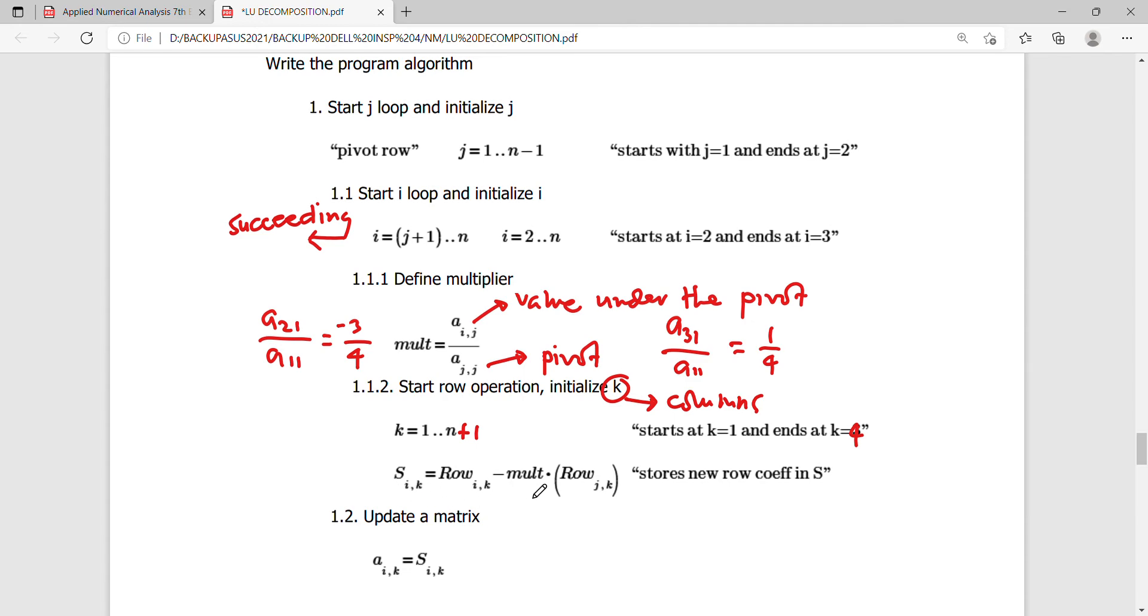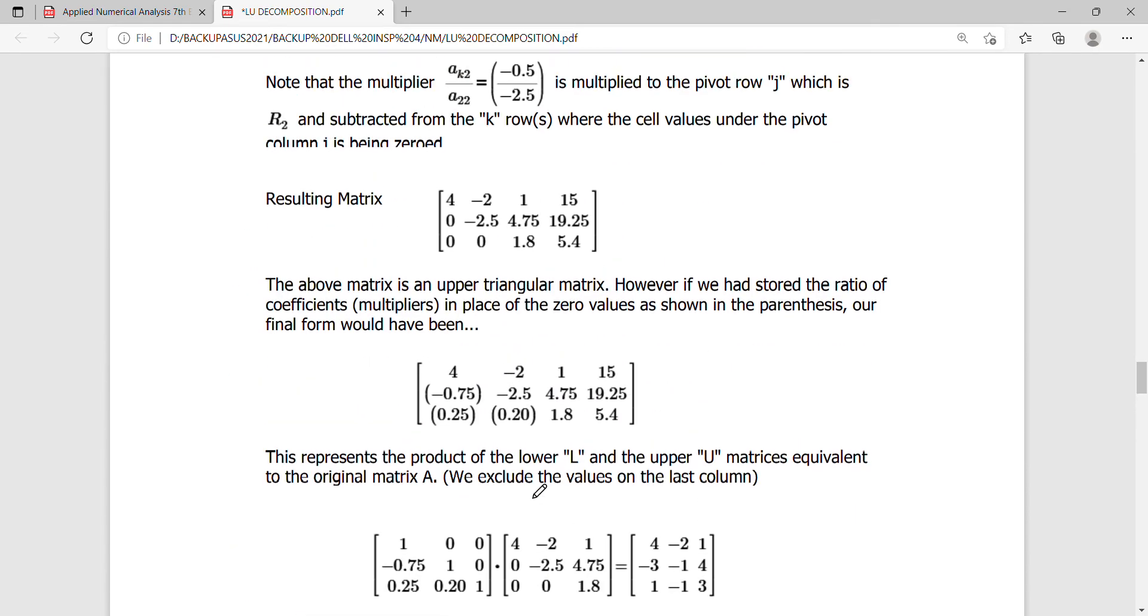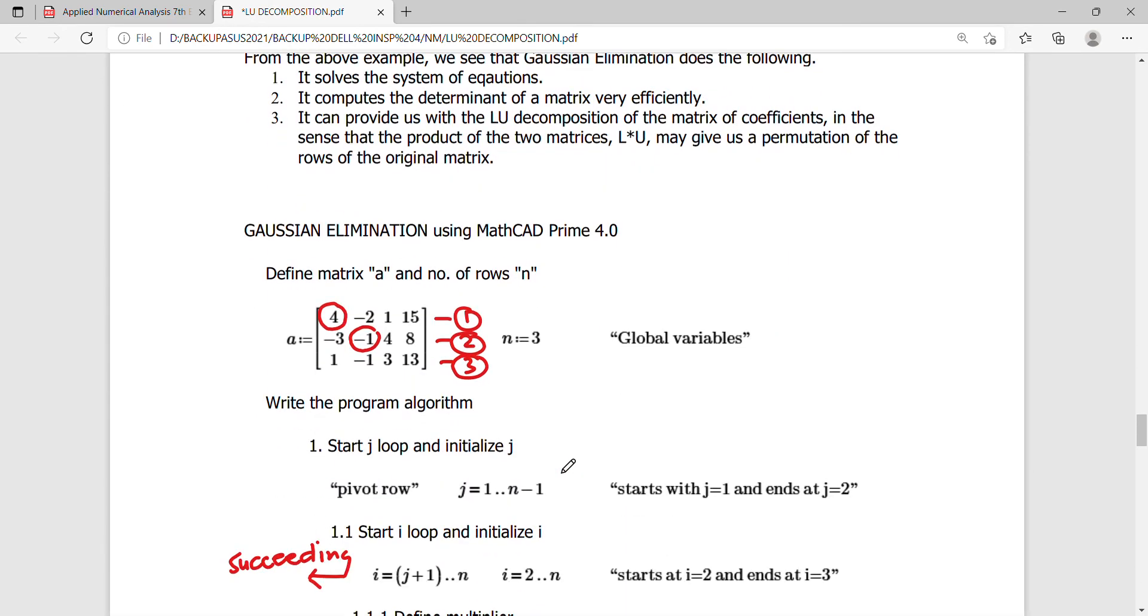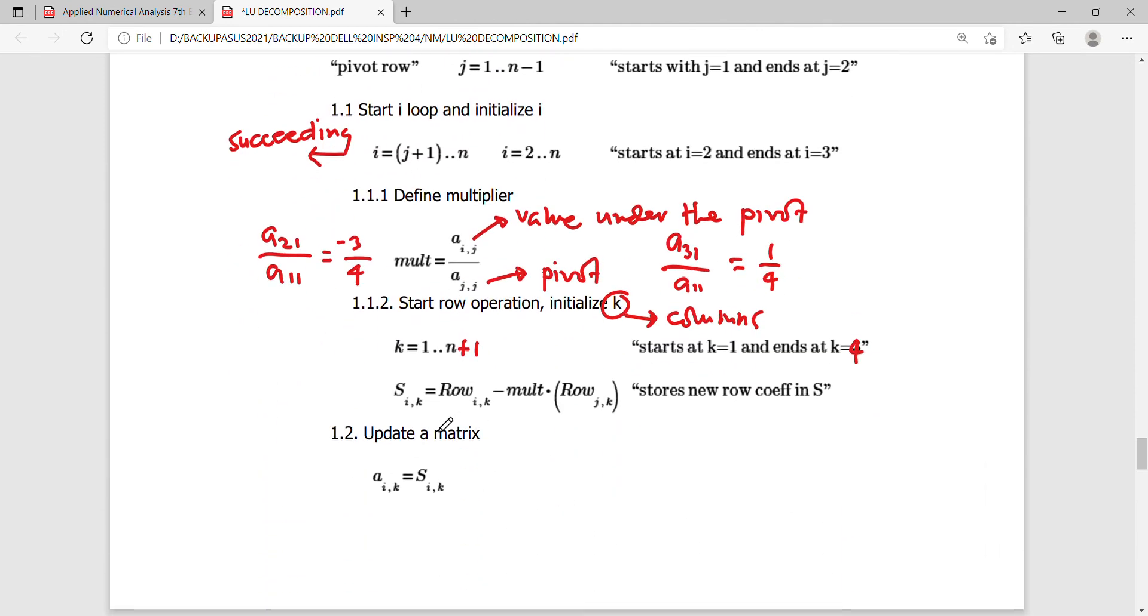And we know that from our formula on top, what we're doing is we are just trying to take the row upon which the operation is performed minus the multiplier multiplied by the row upon which the pivot was taken. So this is now R2. So the pivot here is 2.5. That's why this is 0.5 over negative 2.5. So this is now the equivalent algorithm here. As IK is row IK minus multiplier times row JK.